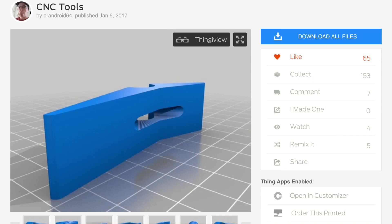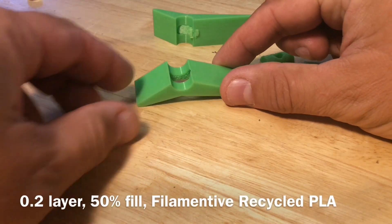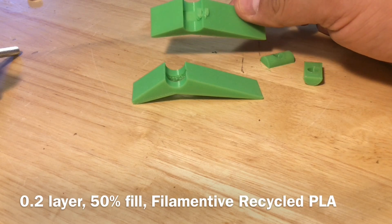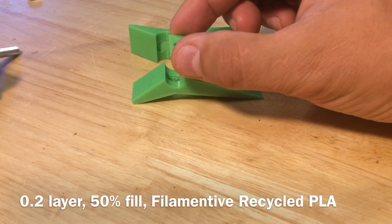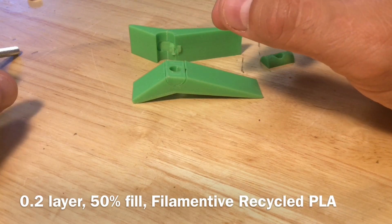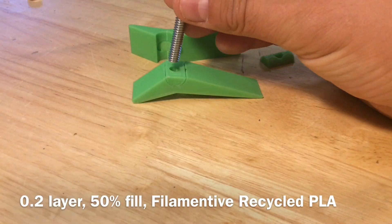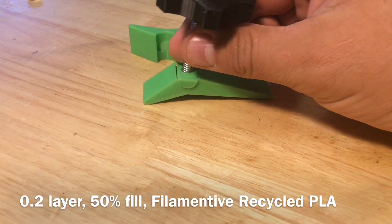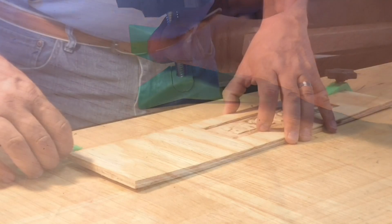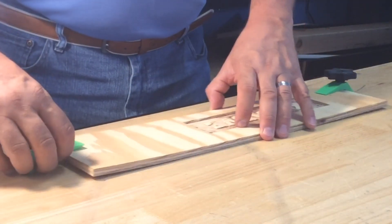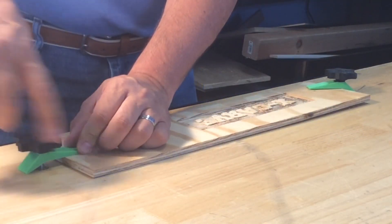I found these CNC clamps by user Brandoid64 on Thingiverse. I really like the design. It's one piece clamp and another pivot. I printed it at 0.2 layer height at 50% fill. I did use supports but that broke away and then the pivot here for the bolt works really well. I like this design.